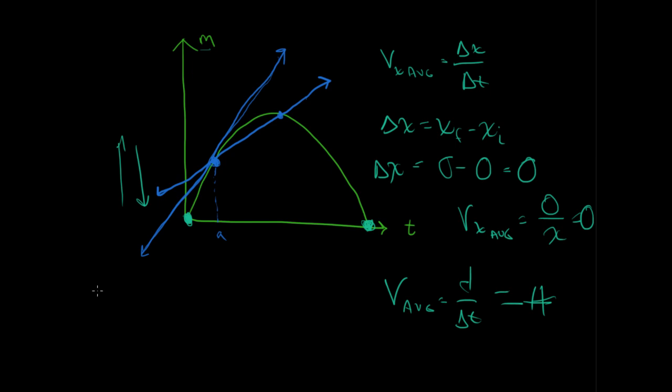And remember, from that formula, your instantaneous velocity is equal to your limit, as your change in t approaches zero, of your change in x over your change in t, which is just your derivative of x with respect to t.